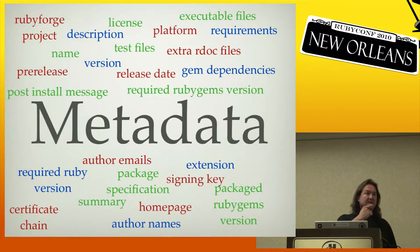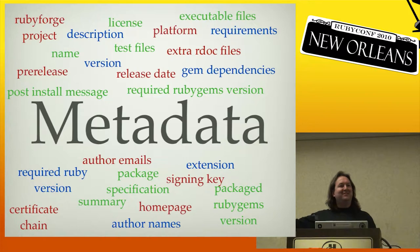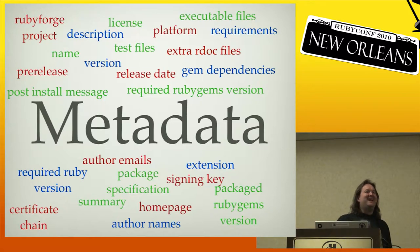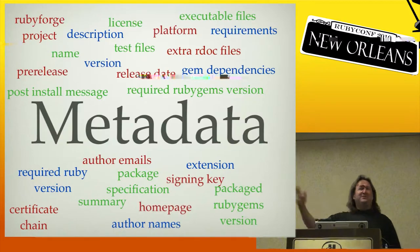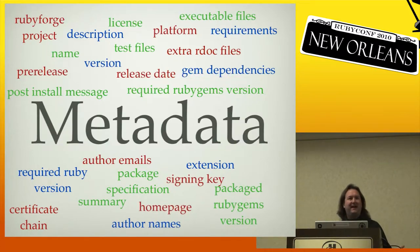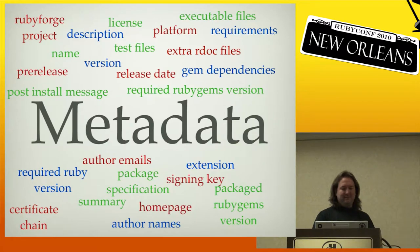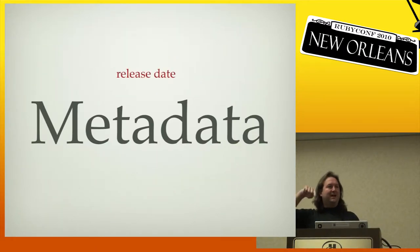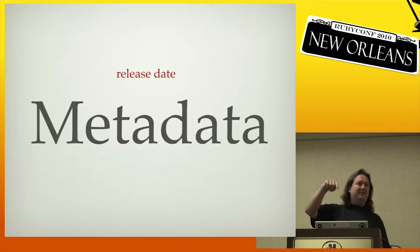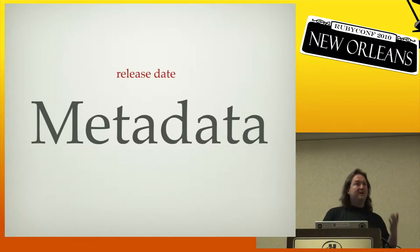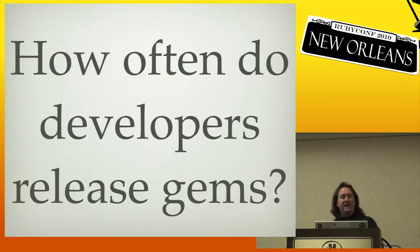There's all this data in here, and I really wanted to look at it and say, what can we find out? One that's really important is release date. Every time you type gem build, if you don't set it in your spec, the current date on your computer is stored in your gem. So the day you typed gem build is stored in the gem file itself. Let's start with that piece of data and ask: how often do we, as developers, release gems?